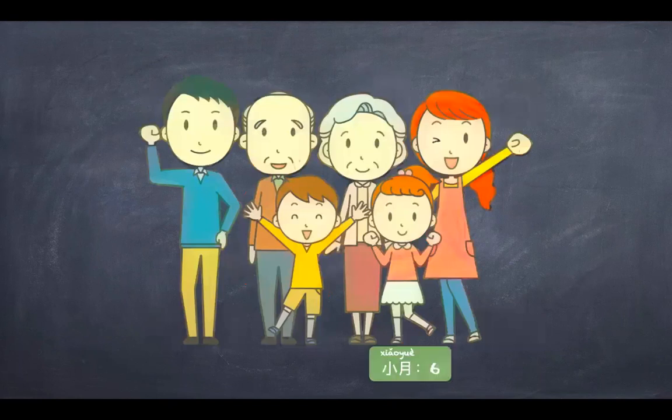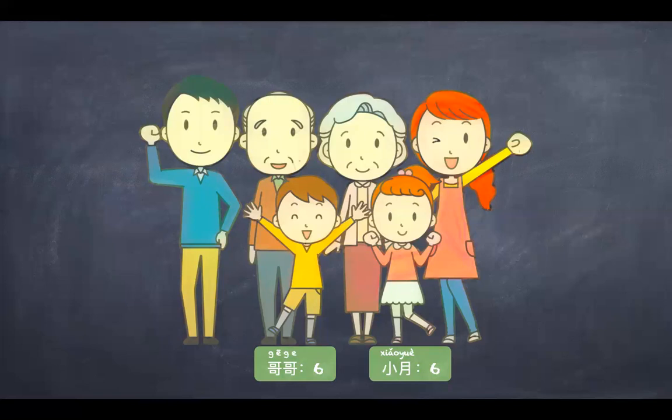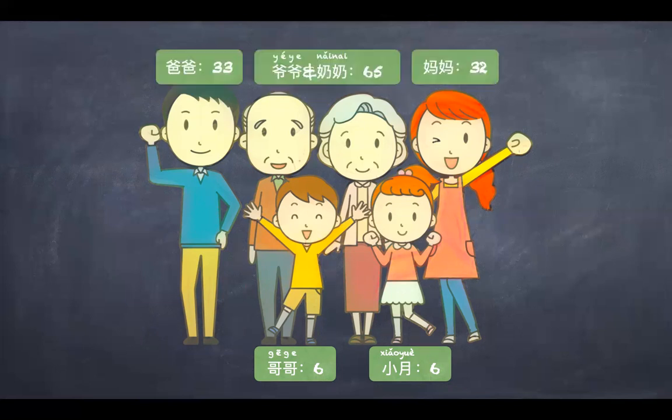Now look at another family. This is 小月. 小月 六岁. This is 小月's twin brother, who is only 10 minutes older than 小月. So 小月 的 哥哥 几岁? Remember, they are of the same age. Right, 小月 的 哥哥 也 六岁.